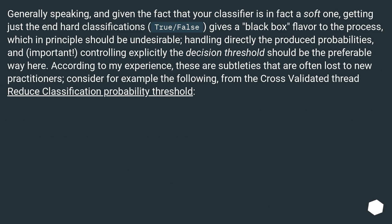Generally speaking, and given the fact that your classifier is in fact a soft one, getting just the hard classifications (true/false) gives a black box flavor to the process, which in principle should be undesirable. Handling directly the produced probabilities and, importantly, controlling explicitly the decision threshold should be the preferable way here.